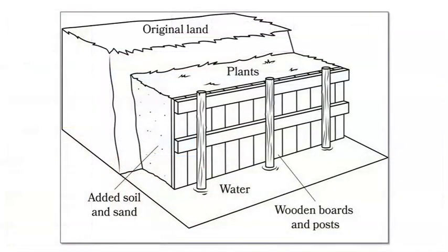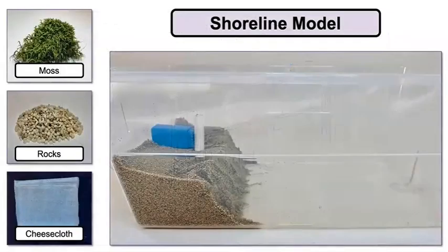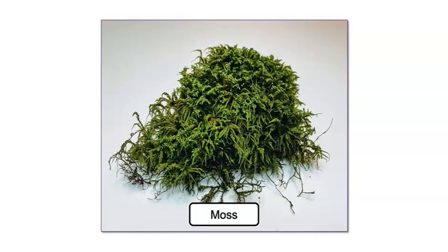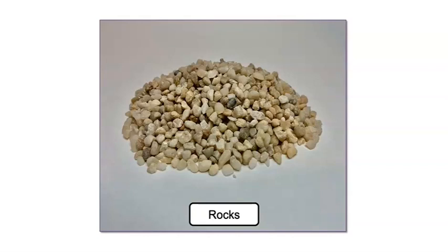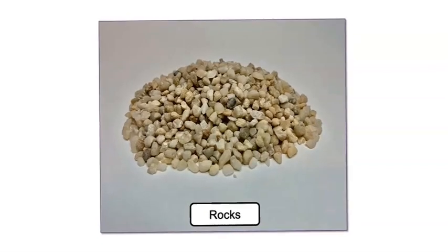Which materials could help hold the land in place, like the plants in the shoreline protection system? Look at the moss, the rocks, and the cheesecloth. How could you use these materials in your shoreline protection system model? Moss is green and soft. It also bends easily. Could the moss do a good job of holding the land in place? The rocks are the heaviest material. How could we use the rocks?